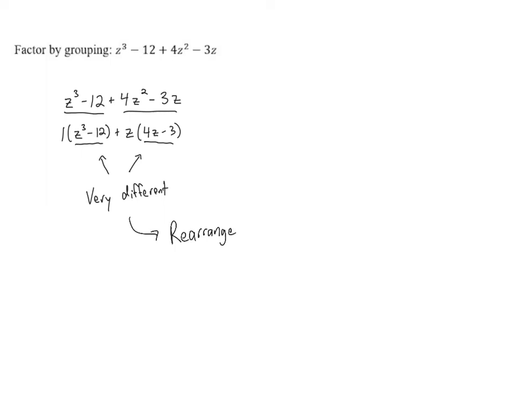Usually the order that's most likely to work is when everything is in standard form. So we're going to start with the z³, then write the z² term plus 4z², then take the z term minus 3z, and end with the constant term minus 12. We're going to try and factor by grouping now.